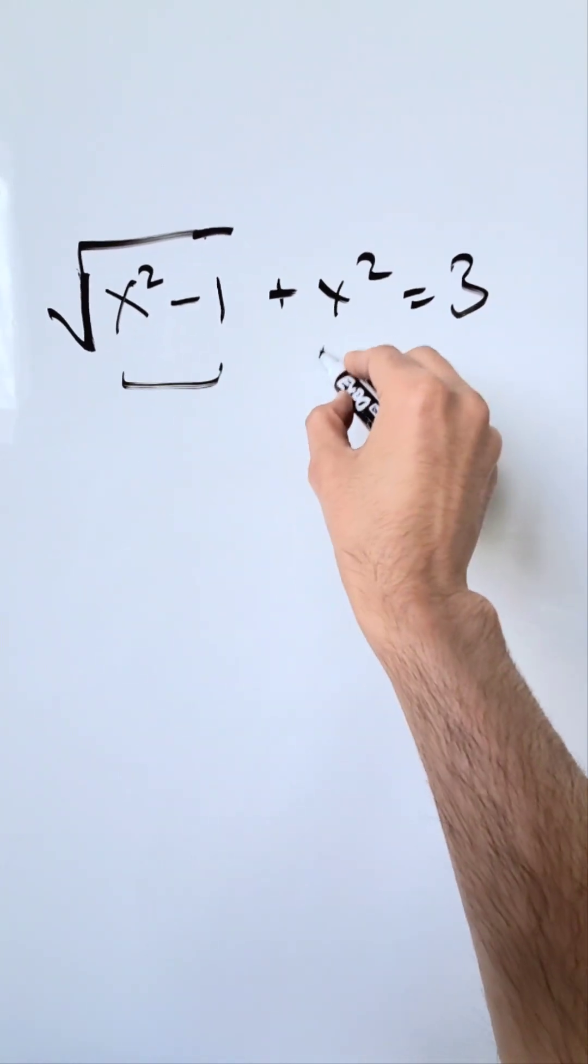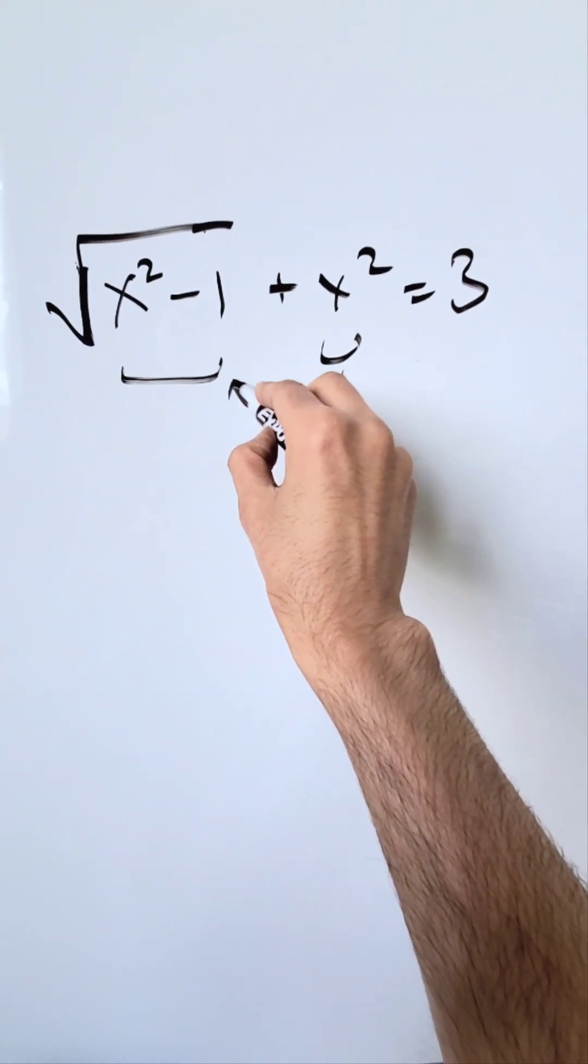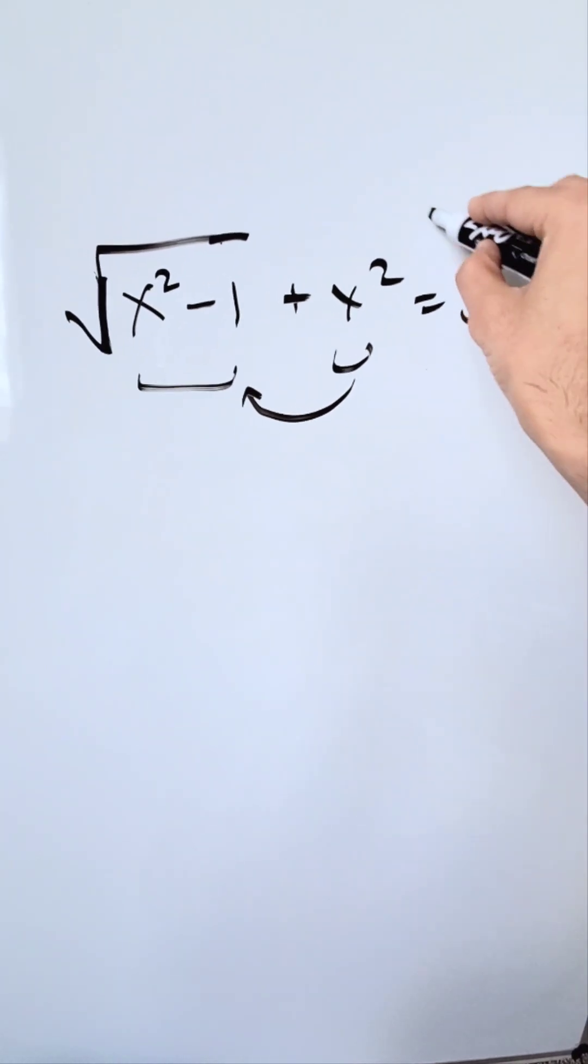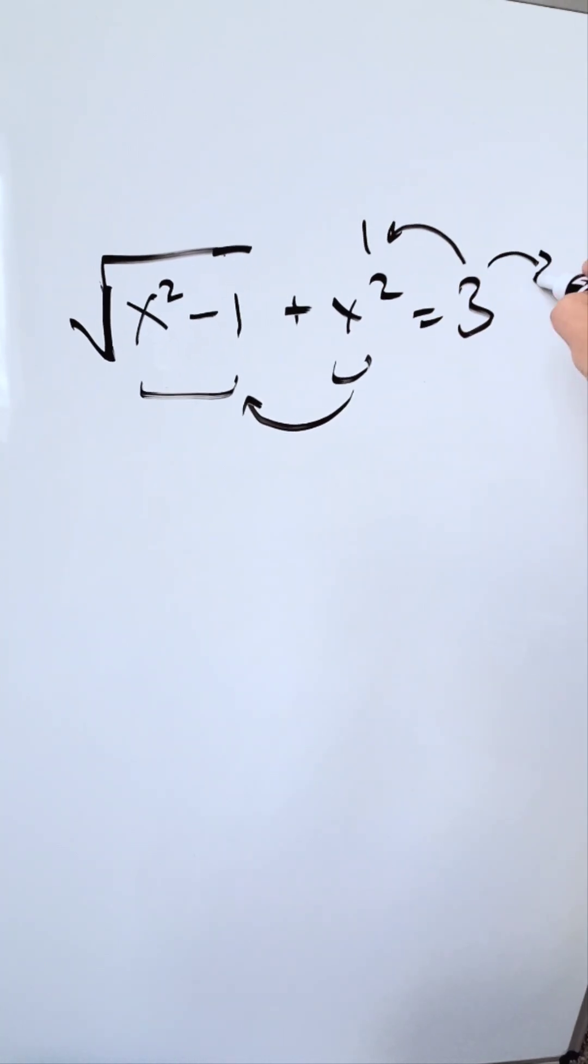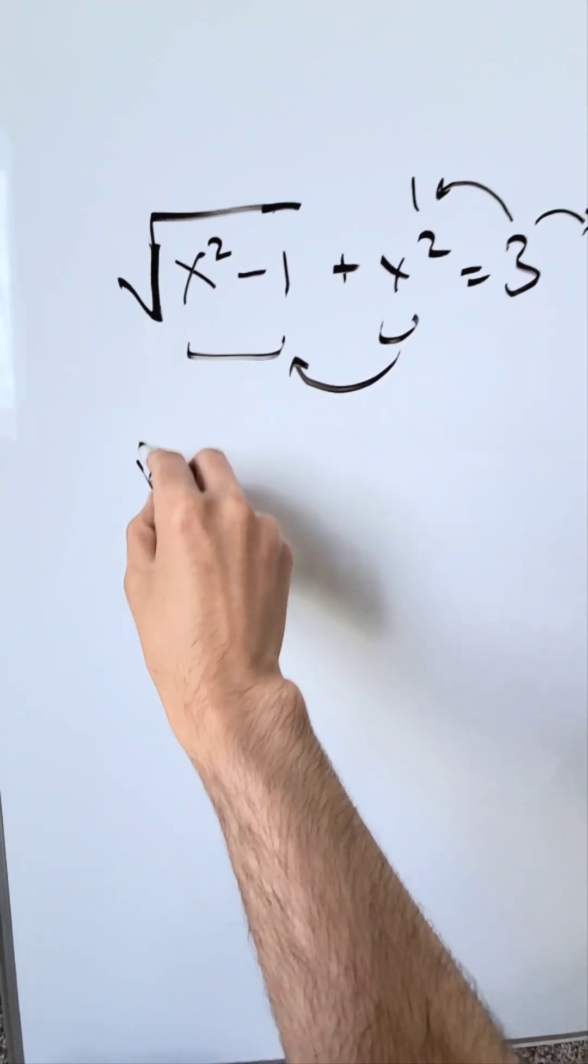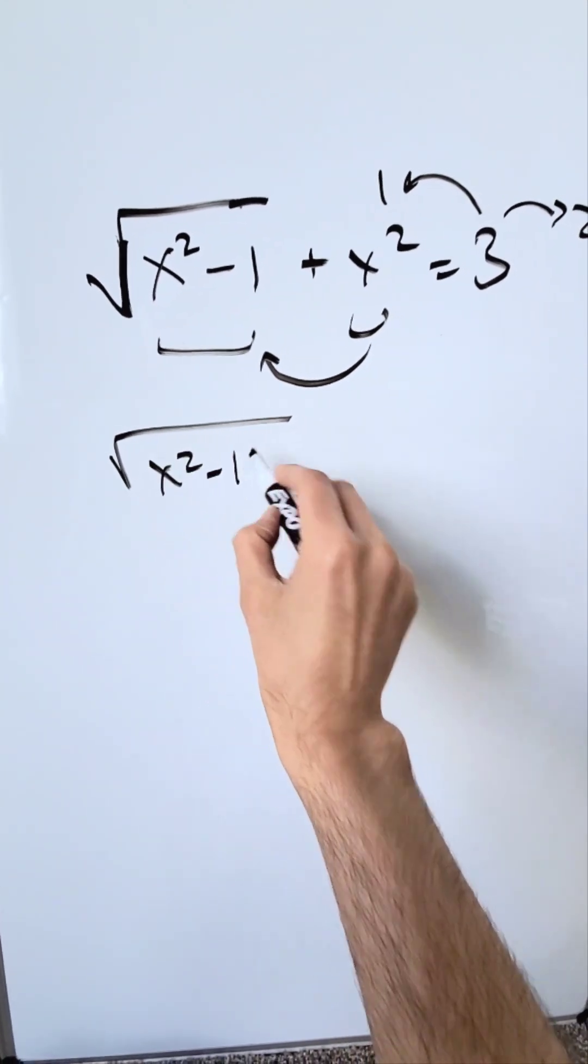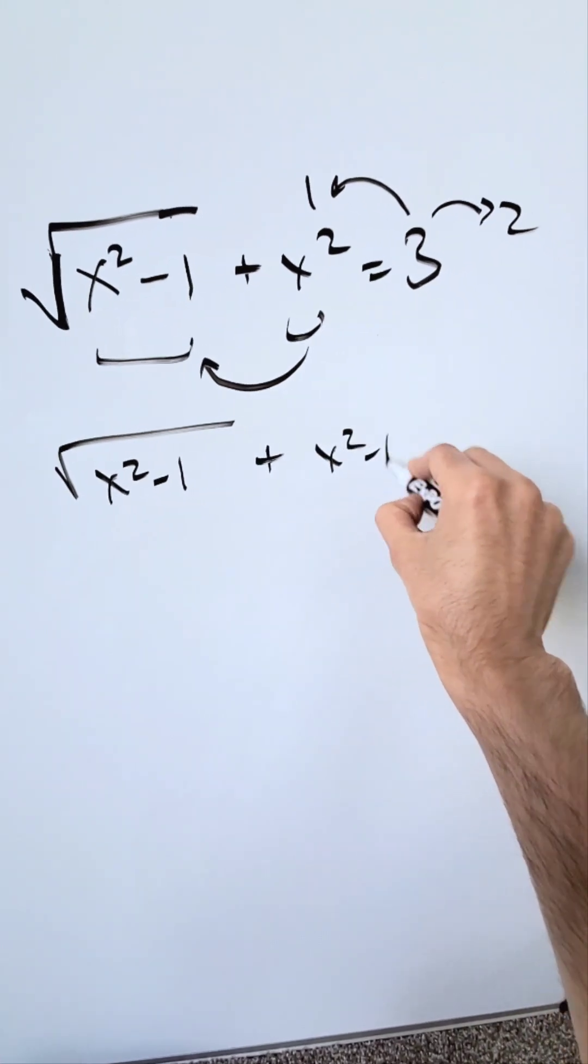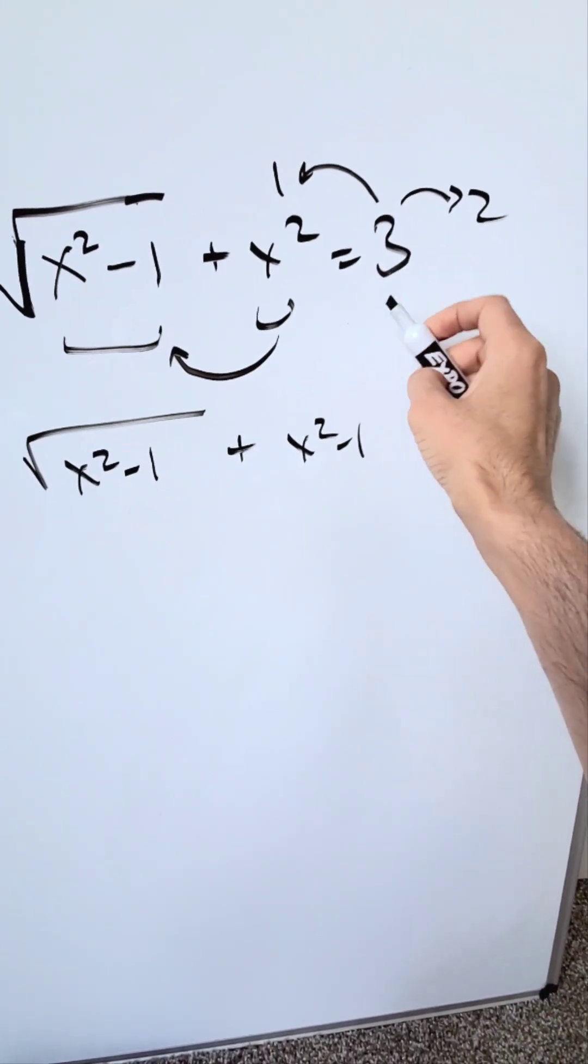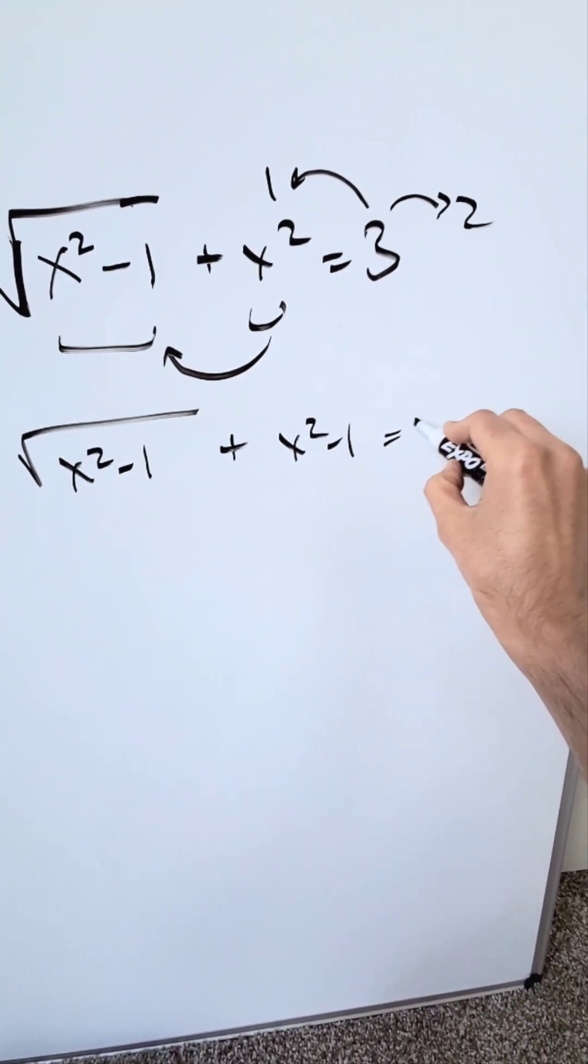I'm looking at x²-1 and x². I want to rewrite the x² term, and I can. I'll take out 1 from x², leaving 2 behind. This gives √(x²-1) + (x²-1) + 1 = 3. I've split 3 into 1 and 2, so this becomes √(x²-1) + (x²-1) = 2.